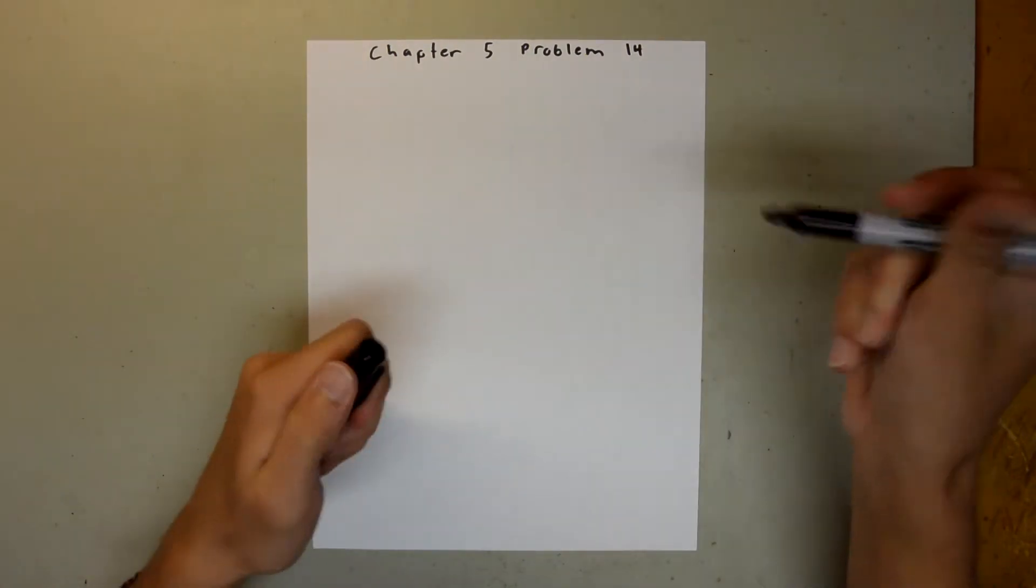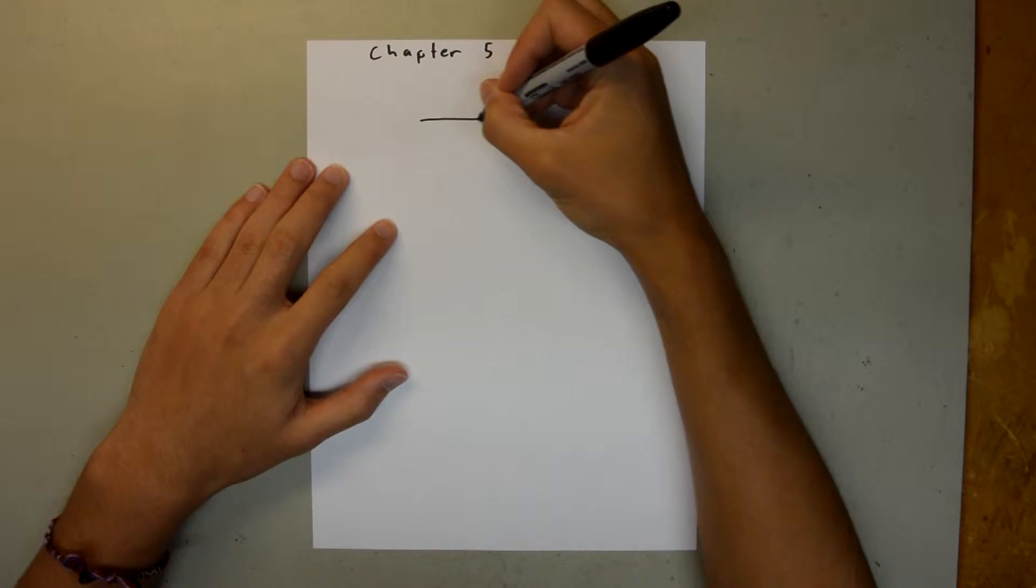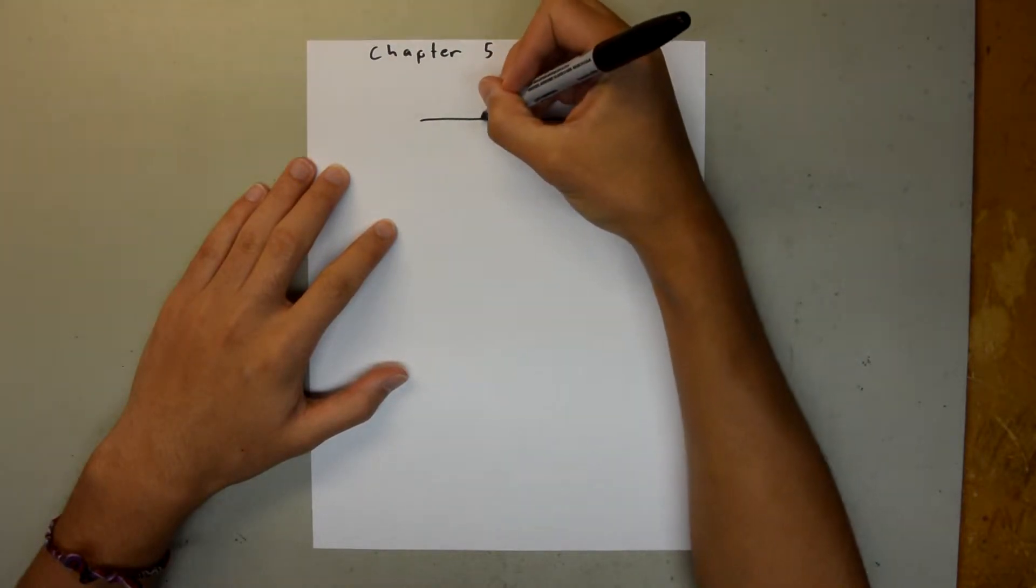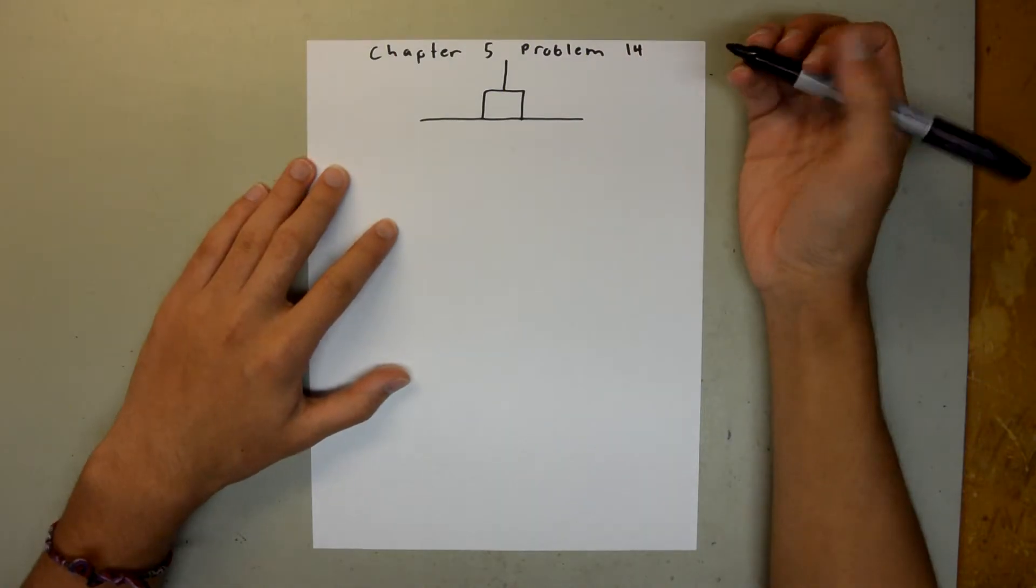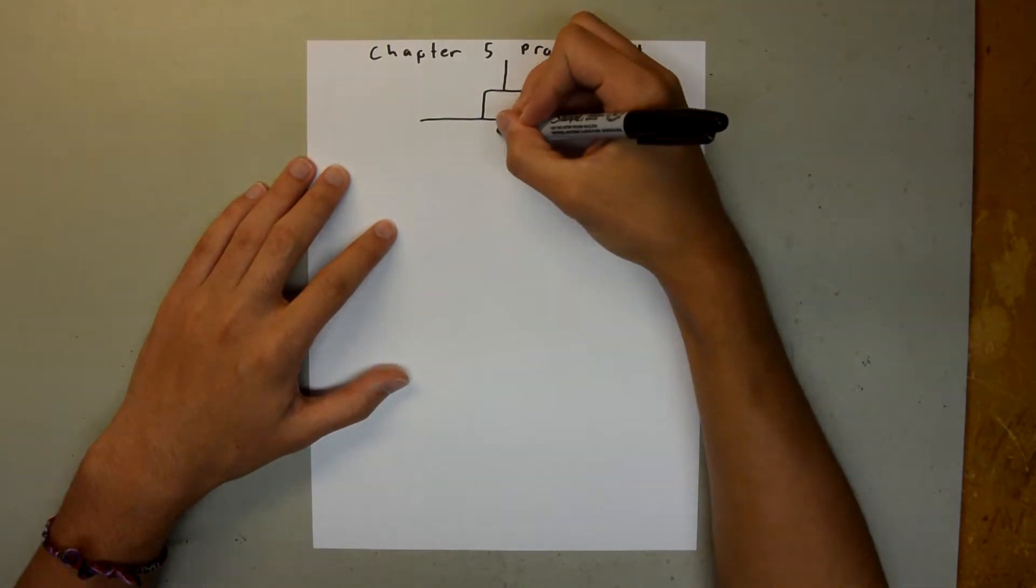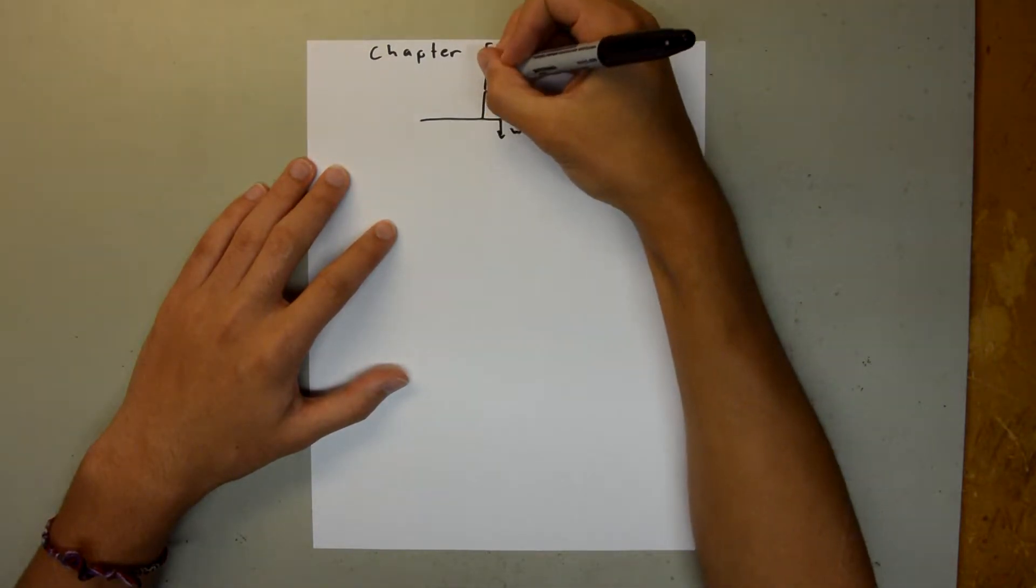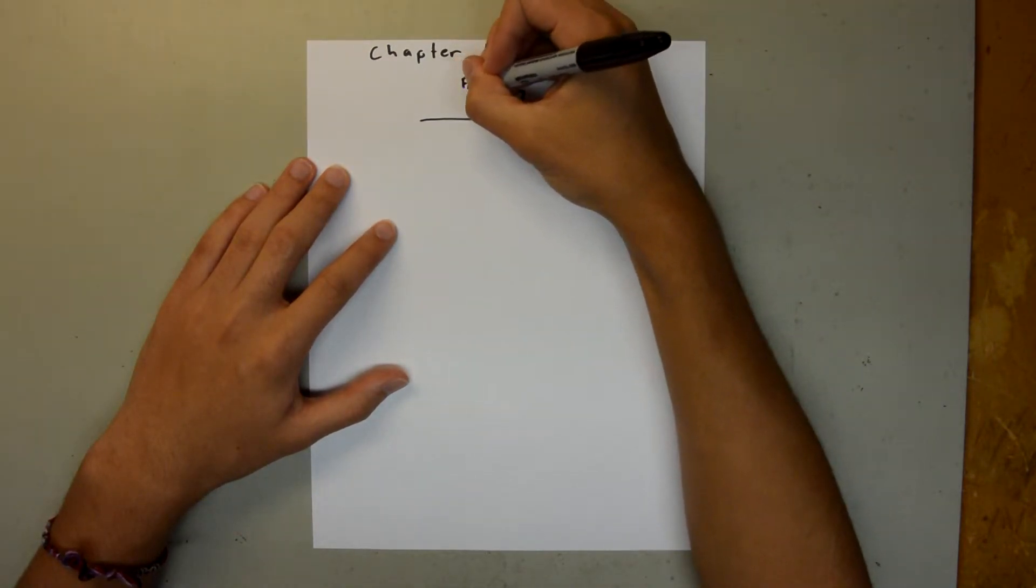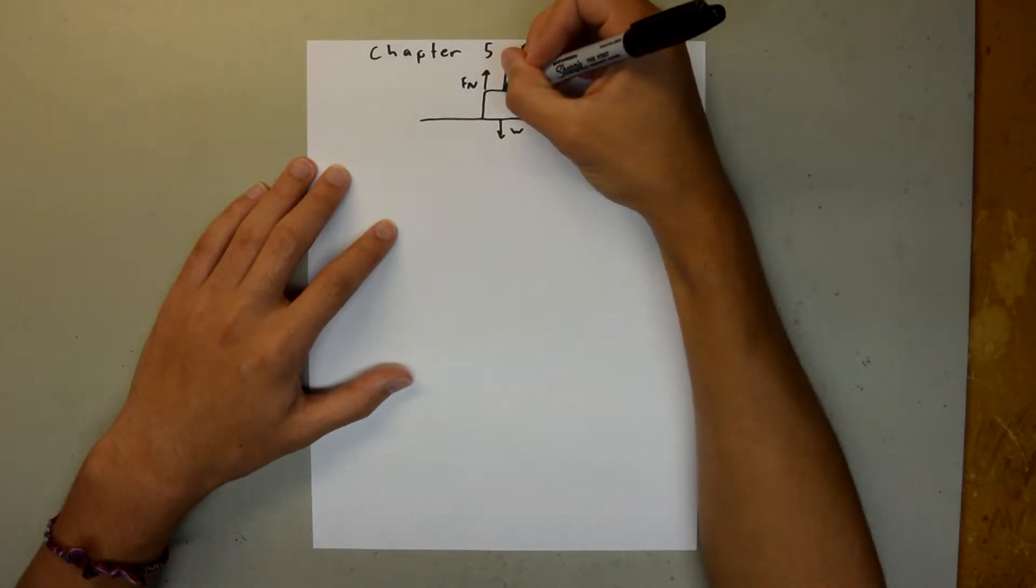The first thing I want to do is draw a picture. Let's just say this is our table, and then we have our block and a string. We can start drawing in our forces. We have the weight force of the block, the normal force from the table onto the block, and the tension force.